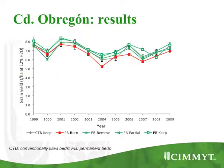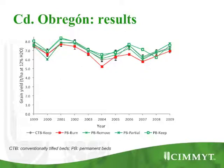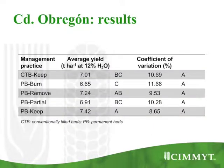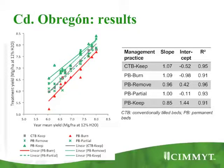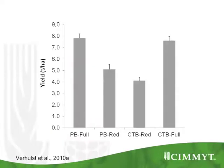Looking at the yield results: the red line represents permanent beds where we burn the residue, while the green lines are permanent beds where we keep residue or do partial residue retention. The message is exactly the same — if we combine a zero till system but burn the residue, it has an effect on yield. However, since I'm already irrigating, I'm already controlling the water factor.